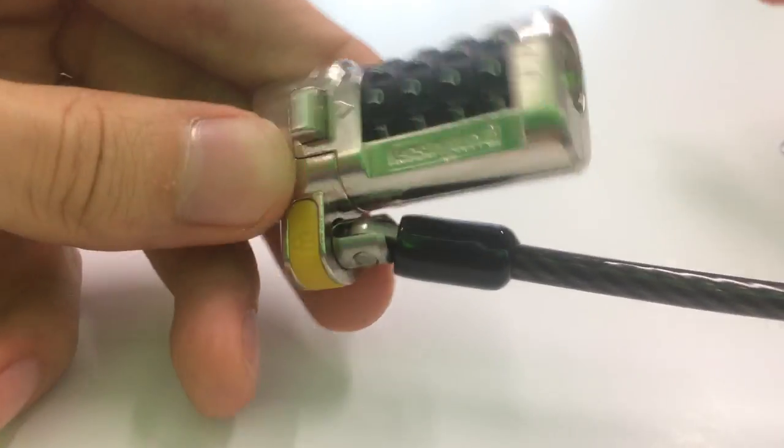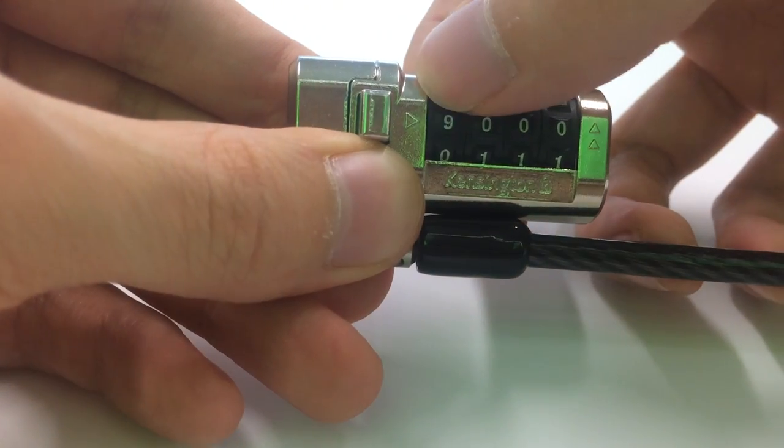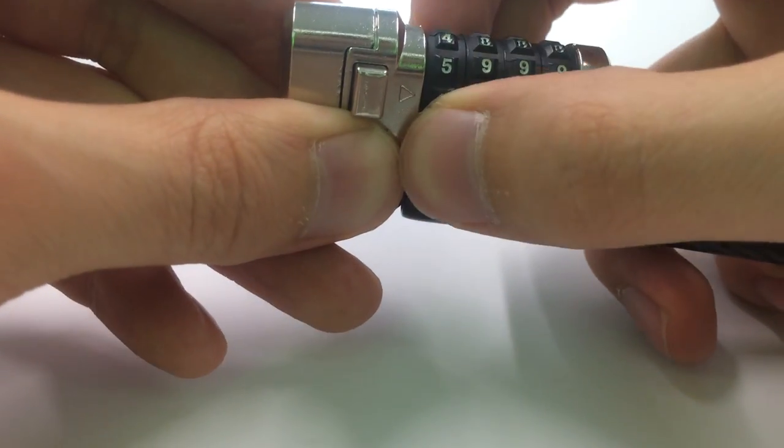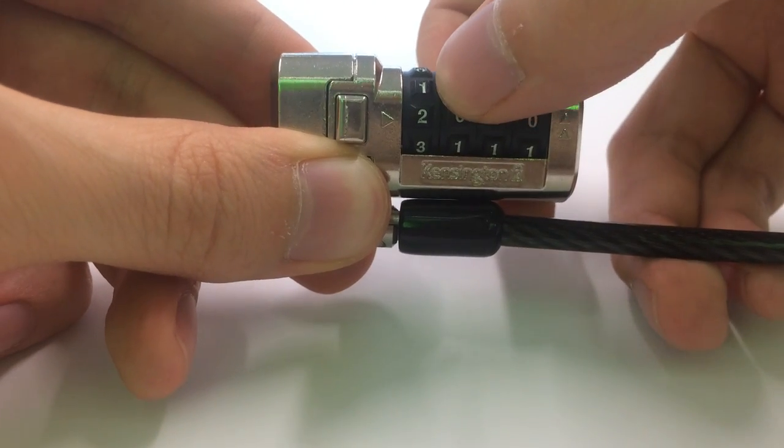You will now set the lock to the combination you have chosen. The first dial is turned towards you. The second dial is turned away from you.